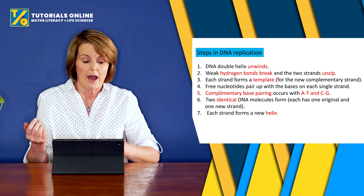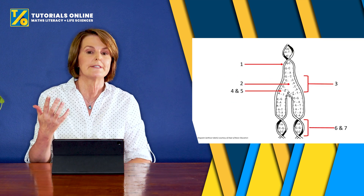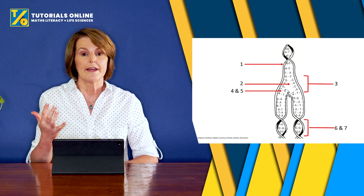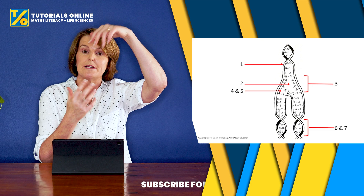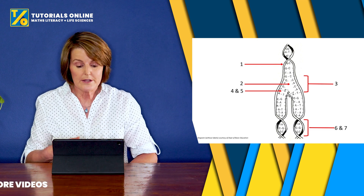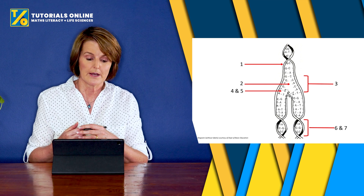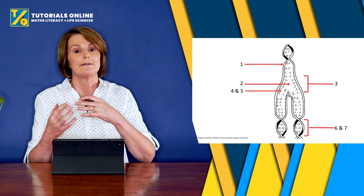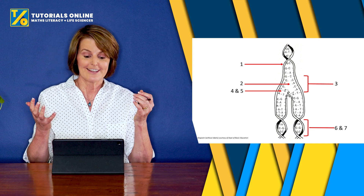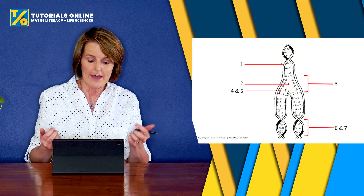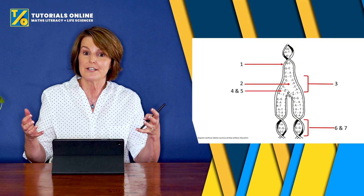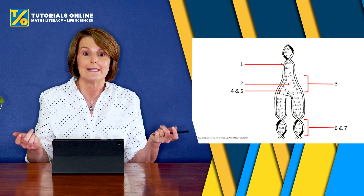I have one more slide — a diagram you might be given in an exam where you have to comment on what's happening. At number one, the double helix unwinds. At number two, the hydrogen bonds are breaking and it's unzipping. At number three, a template is formed. At numbers four and five, nucleotides attach to the template — adenine with thymine, cytosine with guanine — complementary base pairing. At numbers six and seven, two identical DNA molecules form a double helix. Please say the word 'identical' when answering questions.